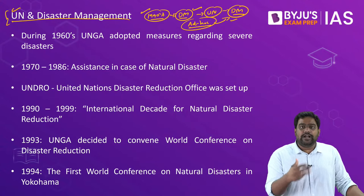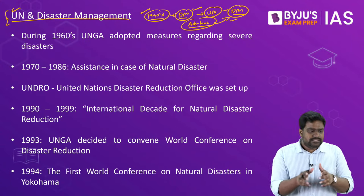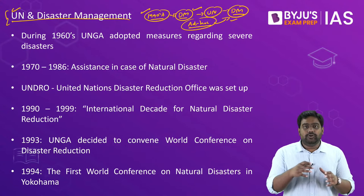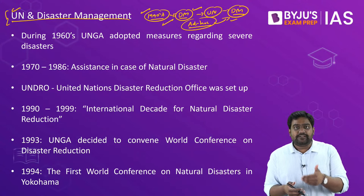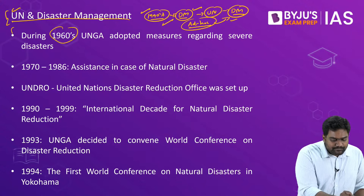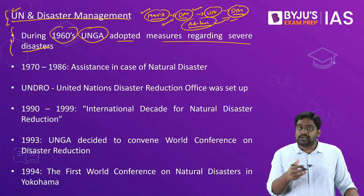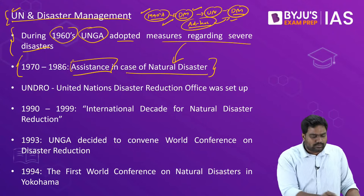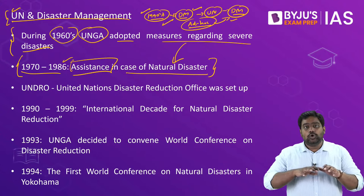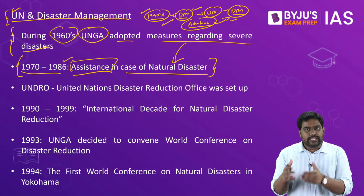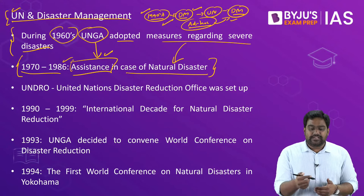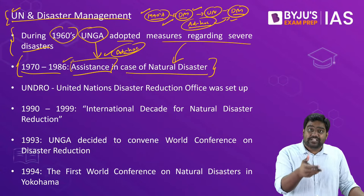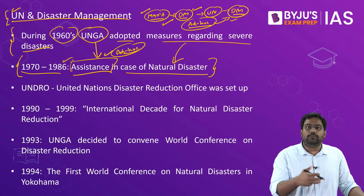Governments around the world were following an ad hoc approach — they would just react to a disaster. Once a disaster had happened, they would simply provide basic emergency relief, search and rescue, and basic assistance, and then forget about the incident. They wouldn't take into account the long-term damage caused by a major disaster. From the 1960s onwards, the United Nations started adopting a few measures with regard to disaster management, providing basic assistance to some countries during major natural disasters. This continued throughout the 1970s and 80s, but there was never a structured response — no global framework to streamline disaster management into day-to-day governance.